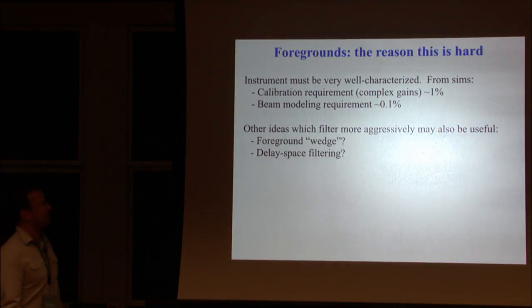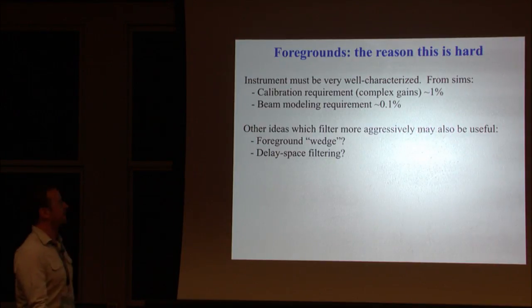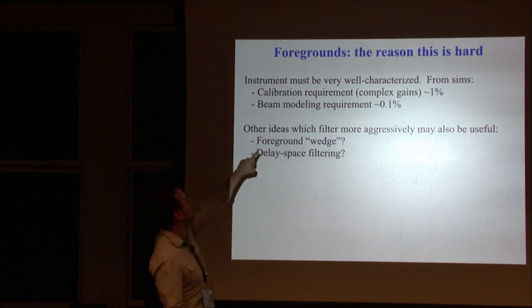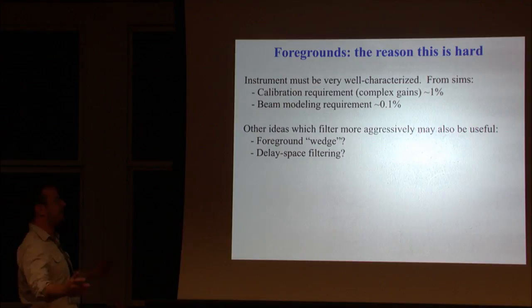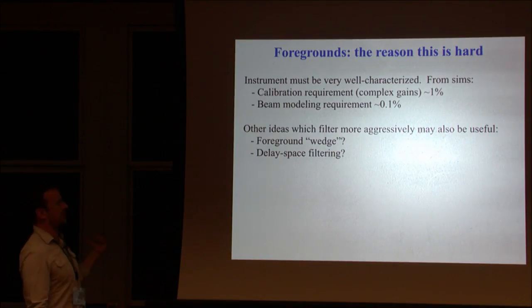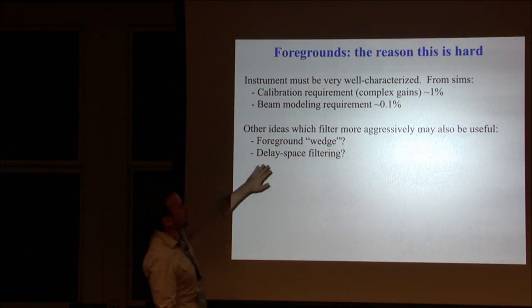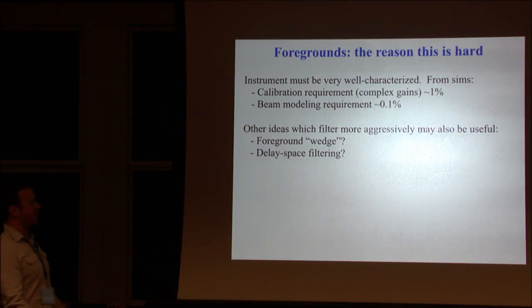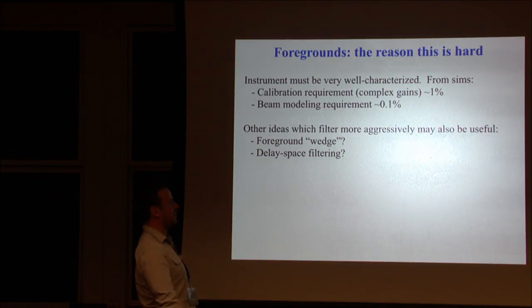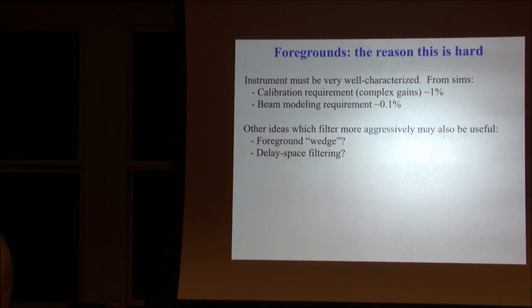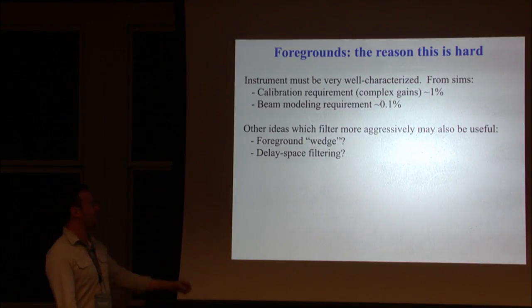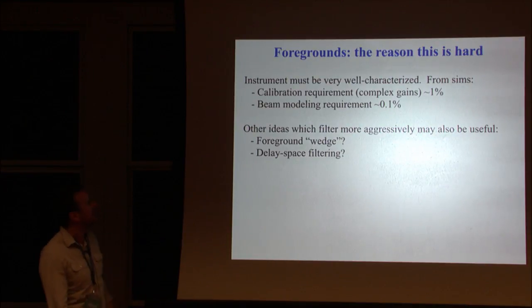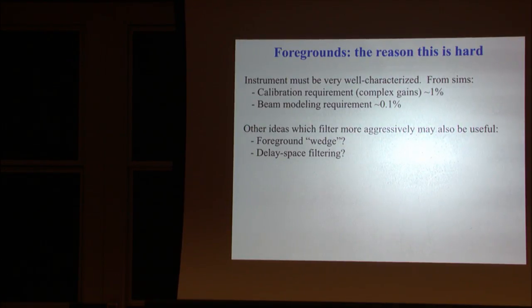There was a very nice paper by Richard Shaw and collaborators in the CHIME collaboration showing that if you have a perfectly characterized instrument, they figured out how to do an optimal separation of foregrounds and signal with a lot of linear algebra tricks. You lose very little. You just lose the modes with low K parallel and arbitrary K perpendicular. But this assumes a perfect instrument. If the instrument is imperfectly characterized, we know from simulations that the calibration requirement is about 1% and the beam modeling requirement is about 0.1%, which is very hard. I would speculate that we will end up with some combination of this optimal linear algebra-based approach and other ideas in the literature for filtering sub-optimally. Some combination of these ideas is likely what we'll end up with, but we're still in the early stages.